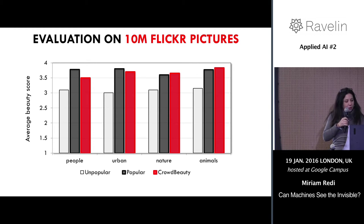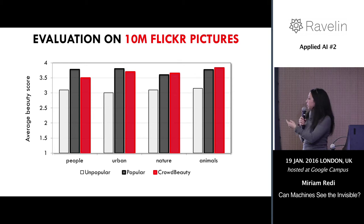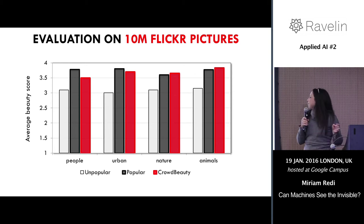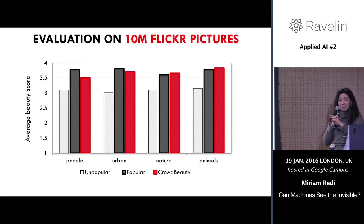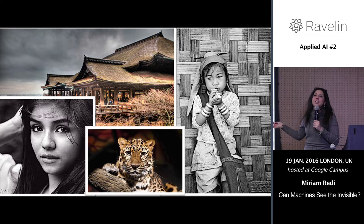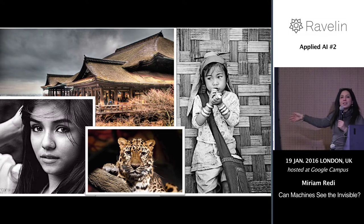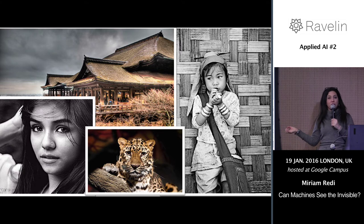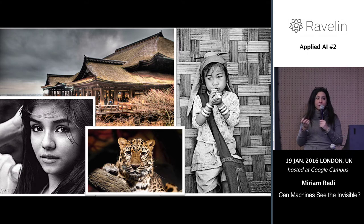The dataset is available — if you are interested, write me an email and I'll give you the link. Those are some examples of those surfaced gems: very beautiful pictures that have almost zero likes and almost zero attention in the network, and those would not be visible to normal users if we didn't have a subjective machine vision system surfacing them for us.